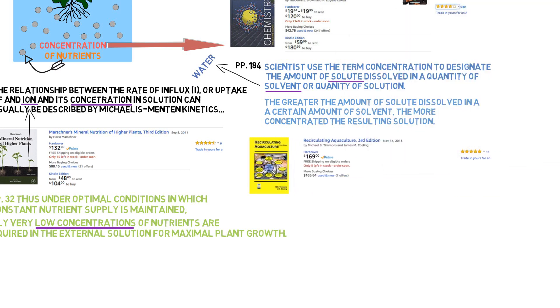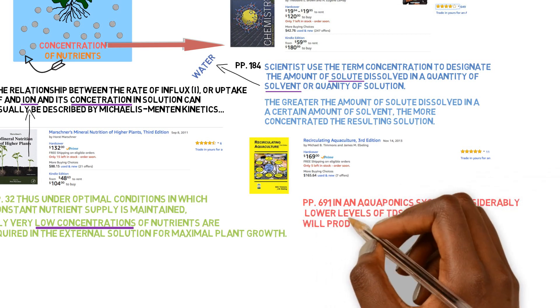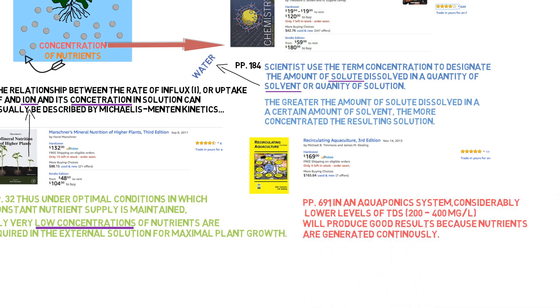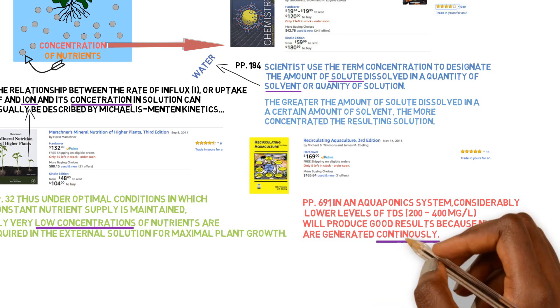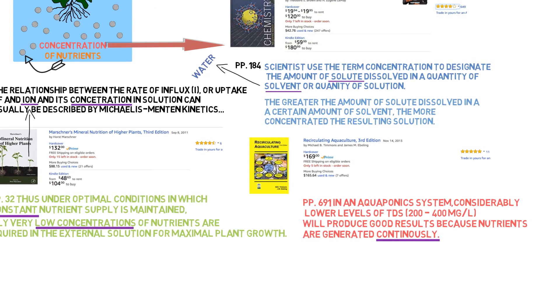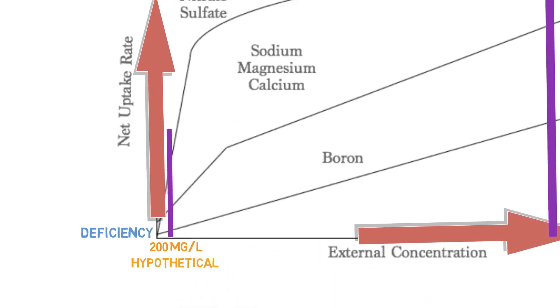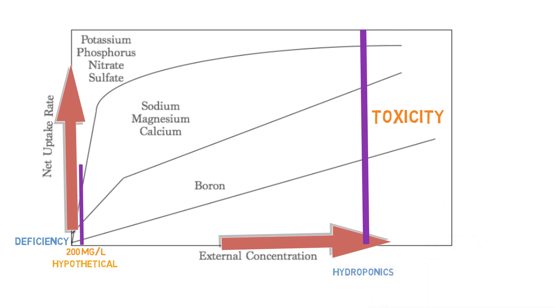Recirculating Aquaculture, page 691. In an aquaponics system, considerably lower levels of total dissolved solids, 200 to 400 milligrams per liter, will produce good results because nutrients are generated continuously. How? Continuously. This is the same thing we just read in the other book. How nutrients can be supplied at low concentrations when they are supplied continuously. 200 to 400 milligrams per liter. This is low concentrations in comparison to other growing methods like hydroponics where the nutrient concentration is 1000 to 1800 parts per million. This is relatively low concentrations.